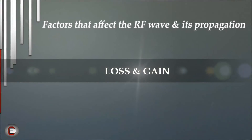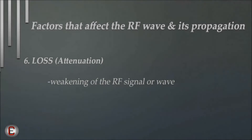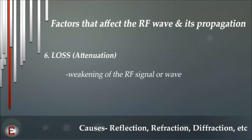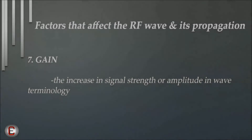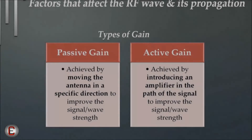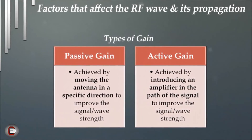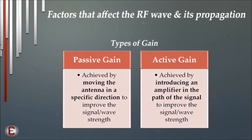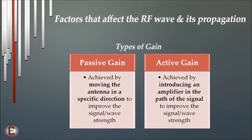Loss and Gain — these are two words you will be hearing a lot in your wireless career. Loss or attenuation is defined as the weakening of the RF signal or wave. This can be caused by many factors such as the ones we discussed. Gain can be simply put as the increase in signal strength or amplitude. There are two types of gains: passive and active. Passive gain is achieved by moving the antenna in a specific direction to improve the signal strength. Active gain is achieved by introducing an amplifier in the path of the signal to improve the signal strength.